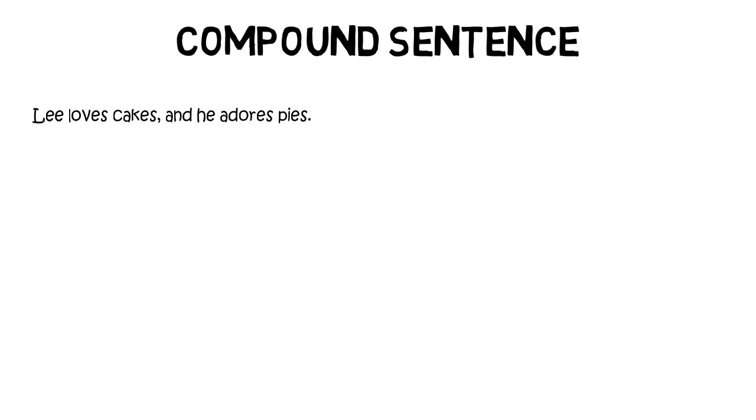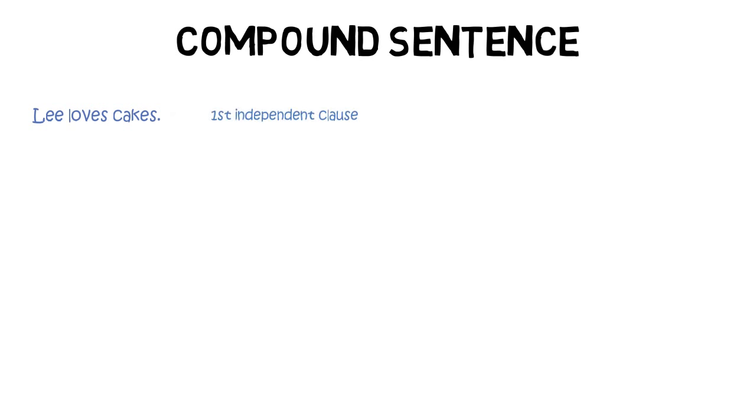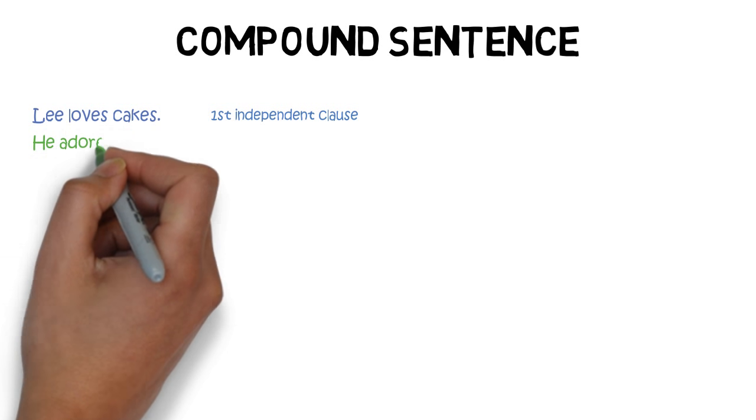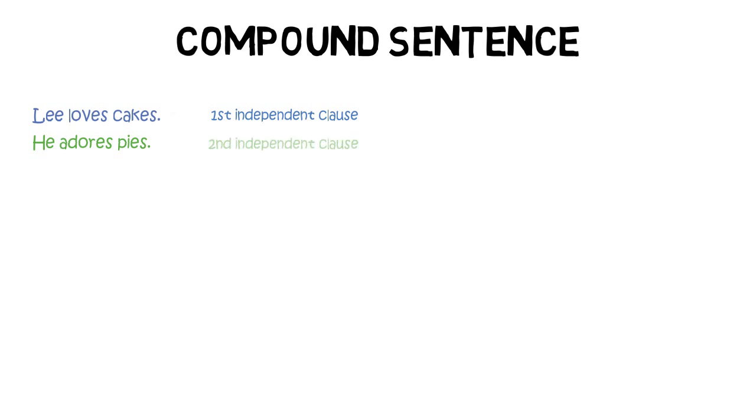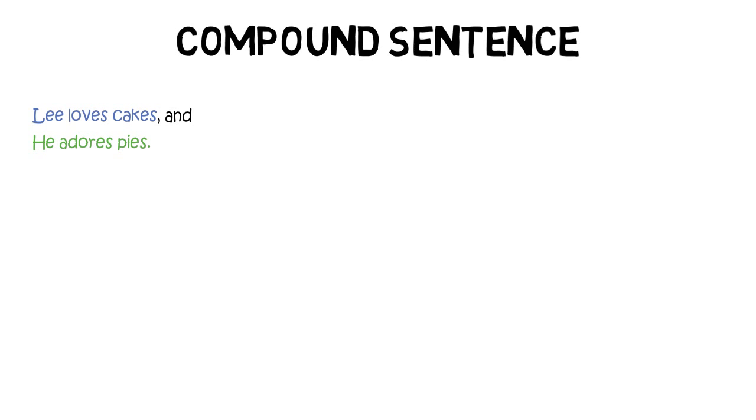Let's dissect a very simple compound sentence. Lee loves cakes and he adores pies. Lee loves cakes. That's an independent clause. It could be a sentence. He adores pies. That's also an independent clause. Again it could be a standalone sentence. So let's take these two sentences and join them together to make a compound sentence. In this example the two independent clauses are joined with a conjunction and a comma.